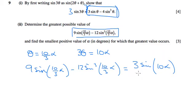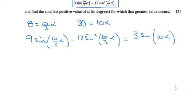And the greatest possible value of this is just 3, because sine goes between minus 1 and 1. So greatest value equals 3.